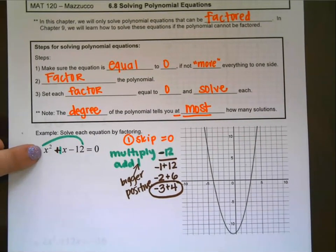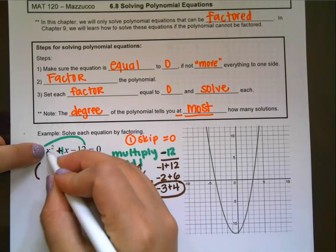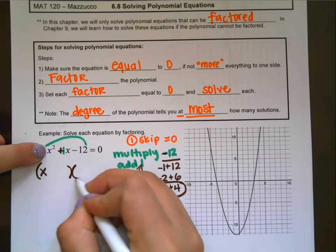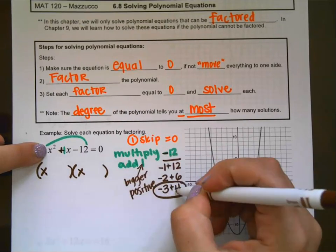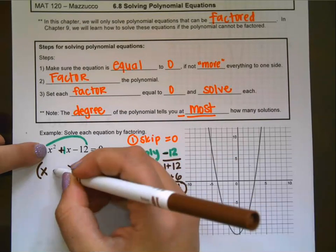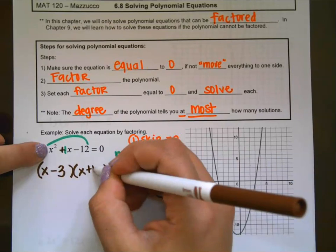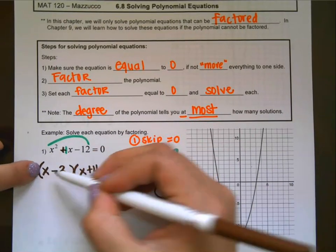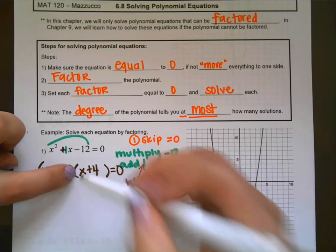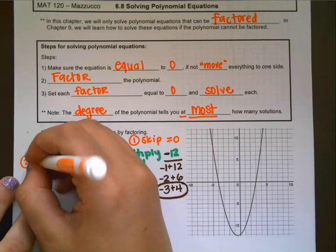Since the leading coefficient is 1, we put x here and x here, and then drop these two numbers into the parentheses: negative 3 and 4. And since this is a positive 1, this can't be simplified further. So that was step 2 — we factored the problem.